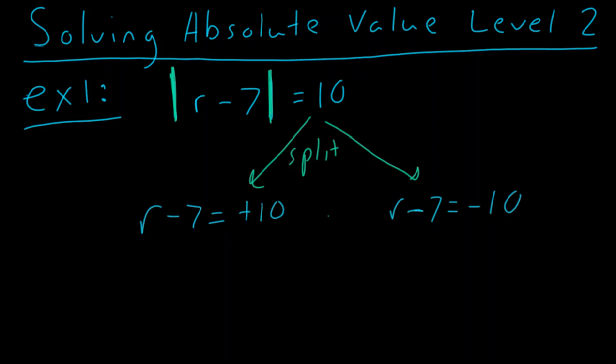So remember we always take our constant and we set it to the positive and negative version of itself. That's because we don't know if what was on the inside here was either equal to a positive 10 or equal to a negative 10 because those absolute value bars make everything positive.